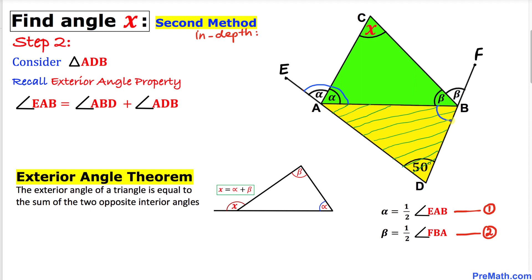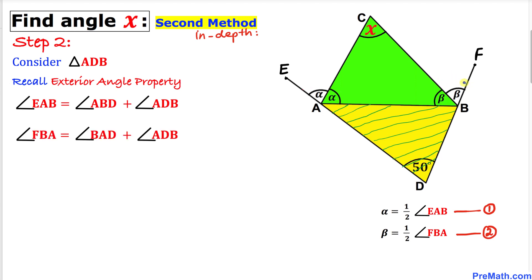In this problem, angle EAB is an exterior angle equal to the sum of the two opposite interior angles ABD and ADB. Likewise, angle FBA is an exterior angle equal to the sum of the two opposite interior angles BAD and ADB. Let me call these equation 3 and equation 4.